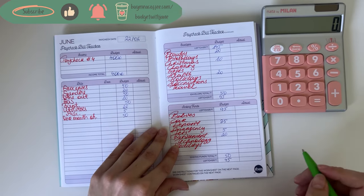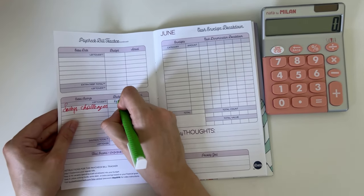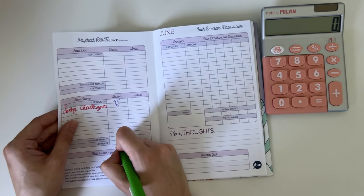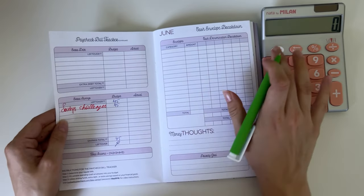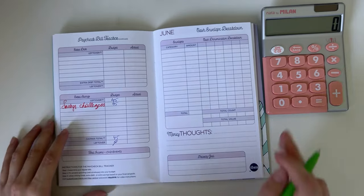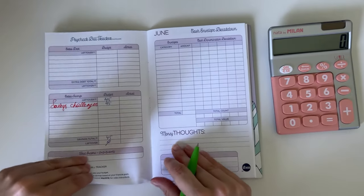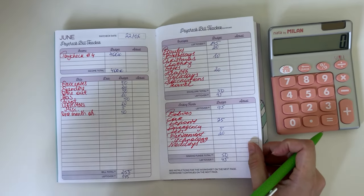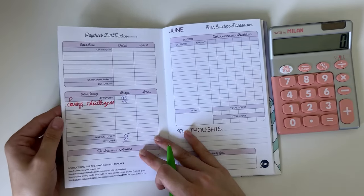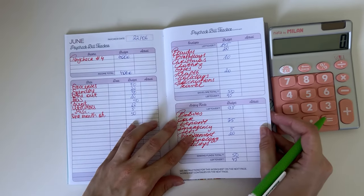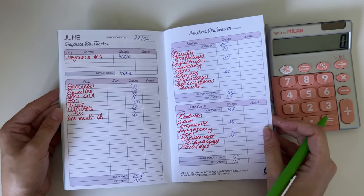All those 45 are going into our savings challenges, so that's zero euros left to budget, which means that each euro of our income has a place to go into our budget. Perfect. I will be back tomorrow with a cash stuffing of this paycheck, so stay tuned for that. Once again, thank you all for the kind words and well wishes.